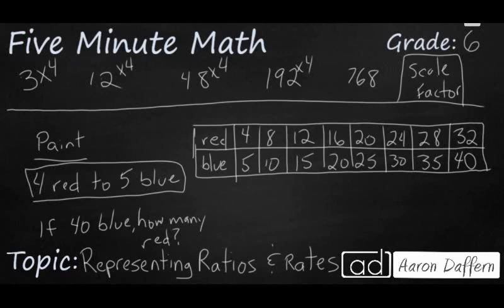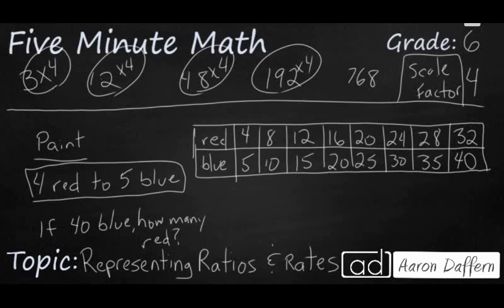Looking at the top, you see that each quantity is multiplied by 4 to get to the next quantity. So our scale factor is going to be 4. And at the bottom, I created this table here with a ratio of 4 reds to 5 blue. And extending it all the way out, you see that when I have 40 blue, my question is how many reds? I'm going to have 32 reds.